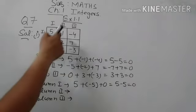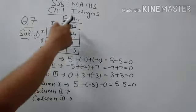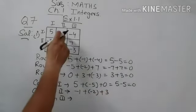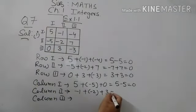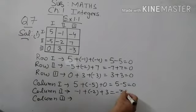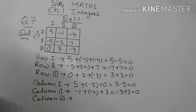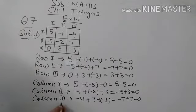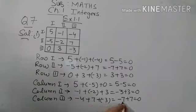Now for column two: minus 1 plus minus 2 plus 3. That gives minus 1 minus 2 equals minus 3, and minus 3 plus 3 equals 0. For column three: minus 3, minus 4, and minus 3 would give minus 7, but with the correct values it works out: minus 7 plus 7 equals 0. So all three columns sum to 0.